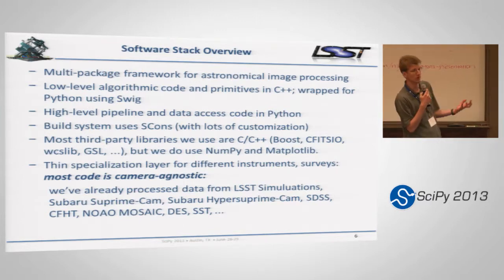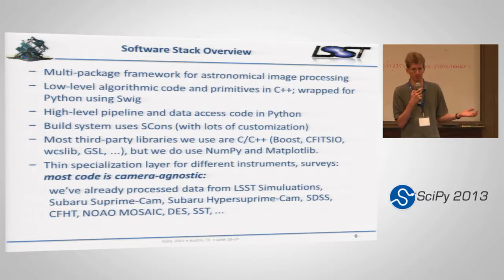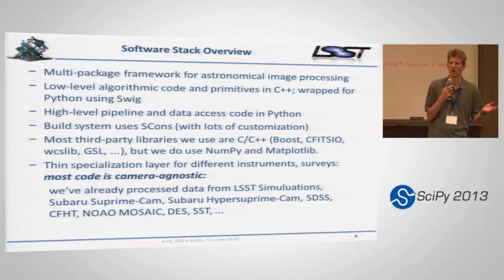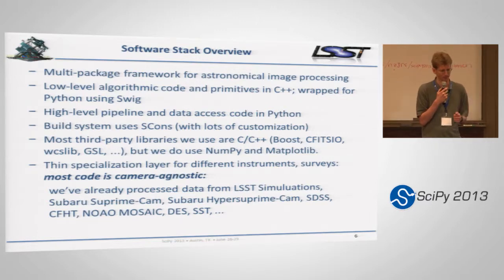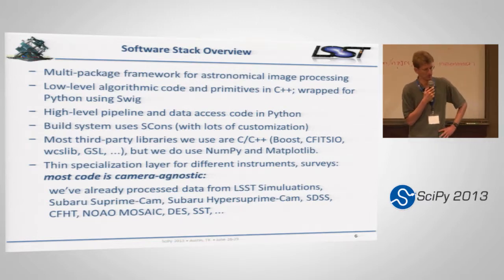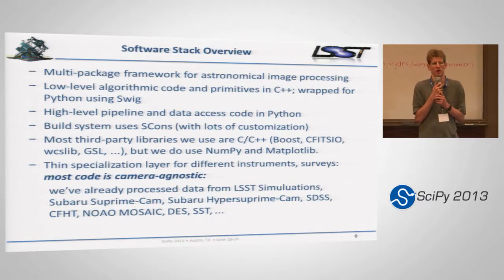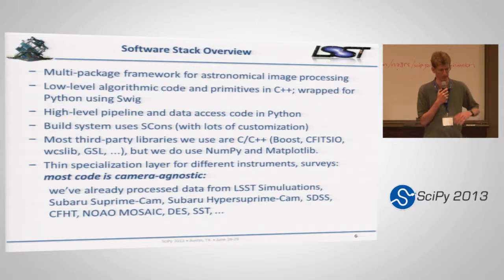Here's how the software we've been building looks. It's multi-package — many Python packages together. Most of them are written mostly in C++ with wrappers using SWIG, and our high-level pipeline code is written in pure Python. Our build system uses SCons. For a reason I'll get into more later, most of the third-party packages we use right now are C and C++ packages, not Python ones — and that's one of the trade-offs that comes with the design we've gone with so far.